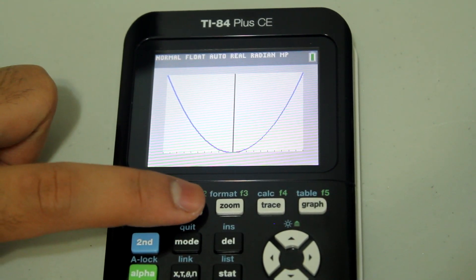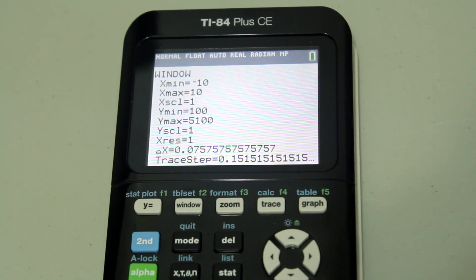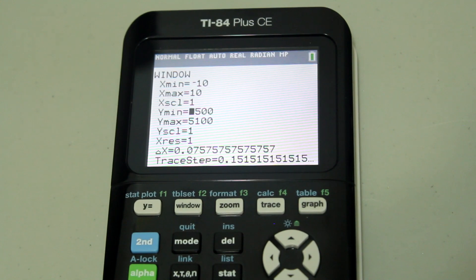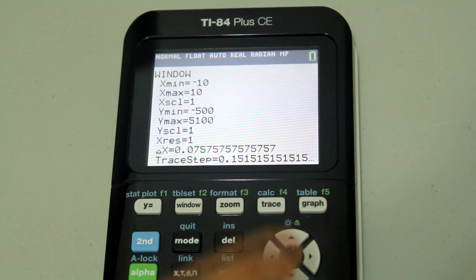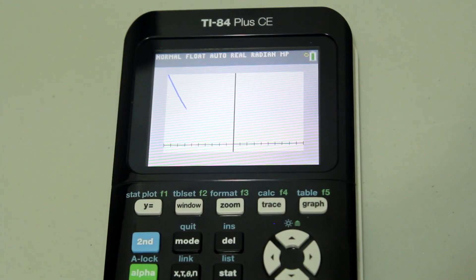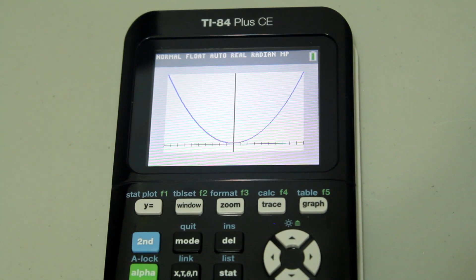So if I want to see my x-axis, all I have to do is go into the window and change the y min to a negative number. Let's go from negative 500 to 5100. And when I graph it now, I can see my x-axis and I can also see my graph.